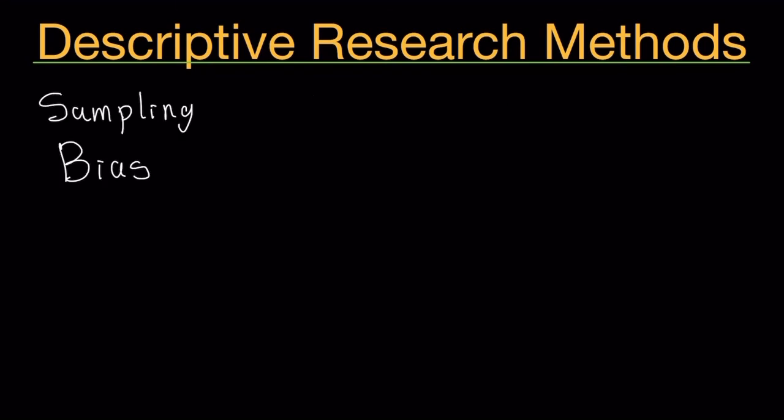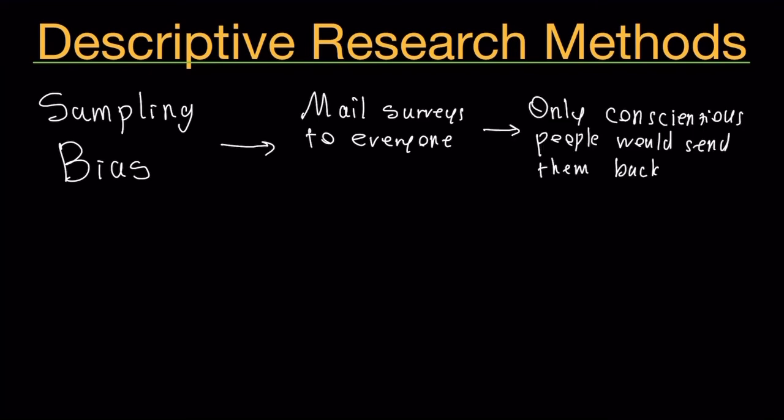Here are some issues with surveys. One is sampling bias. For example, if you were to mail surveys to everyone, then only the people who are conscientious, the people who feel responsible for sending the survey back, only those people would send them back and then you'd have a sampling bias.